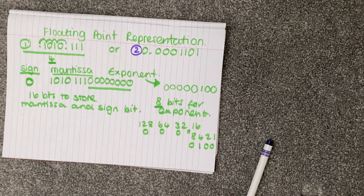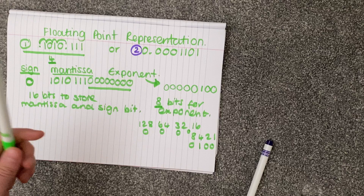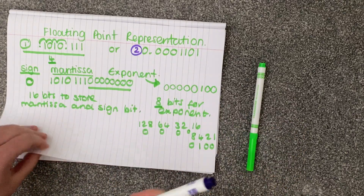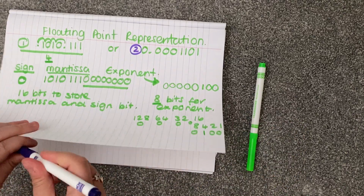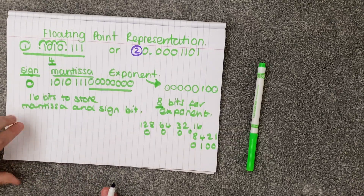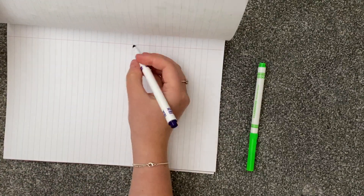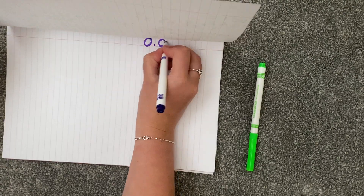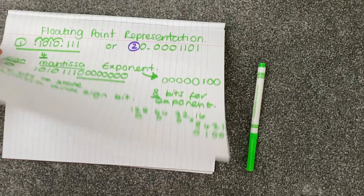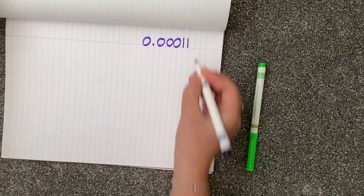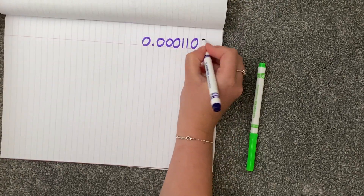I'll show you how to do example two, but I'm going to change example two slightly to make a negative number. So example two that we had here — let me just copy across — 00000101.